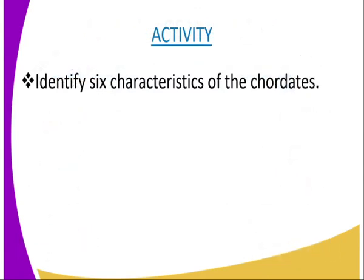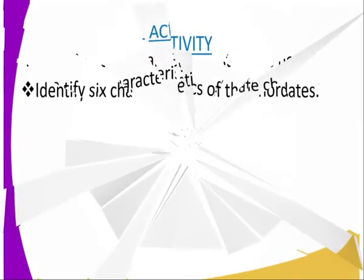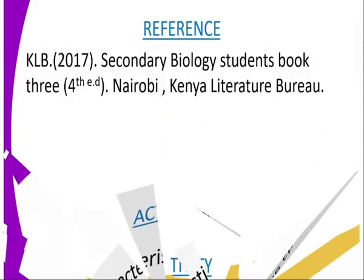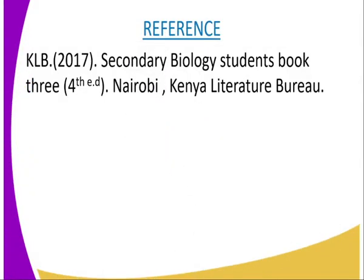Having done and said that, you can have the following activity, whereby you are required to identify six characteristics of the chordates. For more information on this lesson, you can refer to KLB Secondary Biology Student Book, published by the Kenya Literature Bureau, Nairobi.